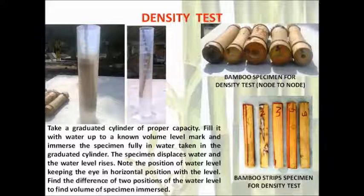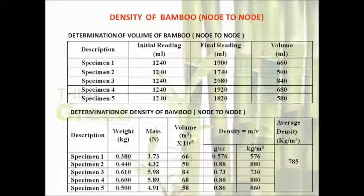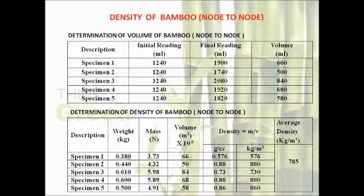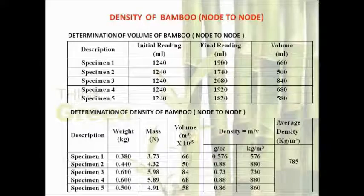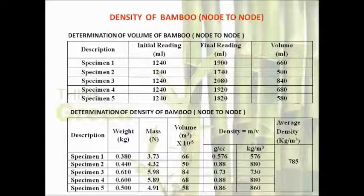In the next slide, we have tabulated all the test results of the bamboo density test. The first two tables are for determining the density of the bamboo node to node specimen. The result of this test is 785 kg per meter cube. From this, we can conclude that the average density of bamboo node to node is 785 kg per meter cube.